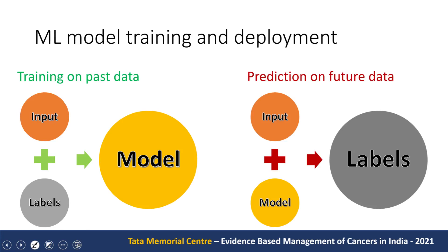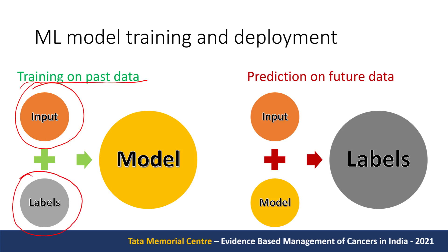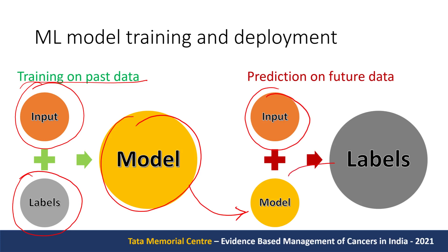There are two phases of machine learning: model training and deployment. During the training phase, we look at past data — the input (e.g., raw image) and the label (the disease state or annotation). With these two, the machine learning process gives us a model. At test time, the model takes new input and gives labels as an expert would — and in some cases, labels that another modality or longitudinal follow-up would have given.